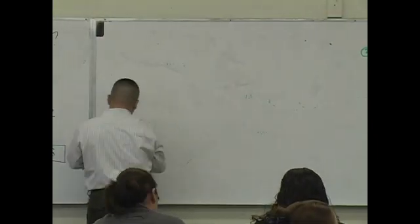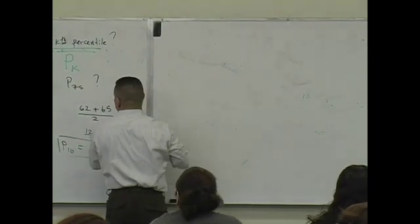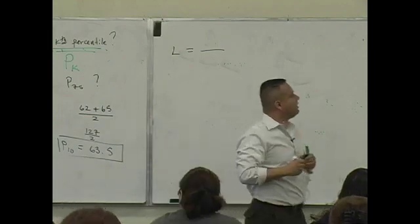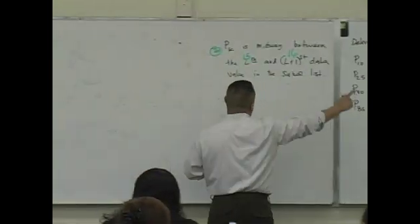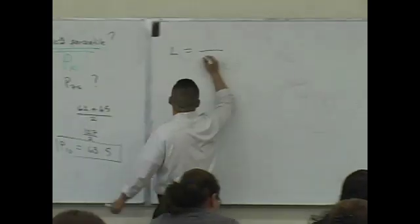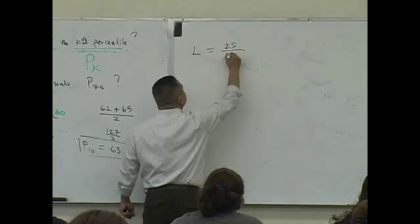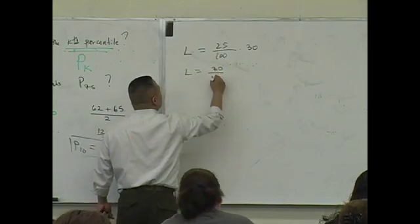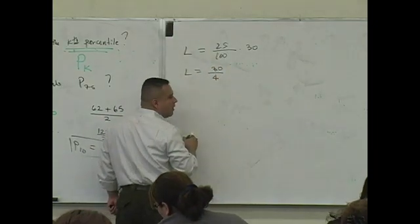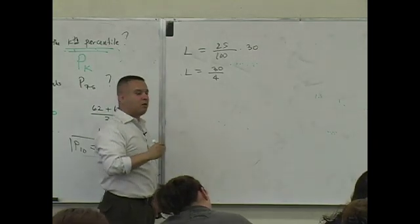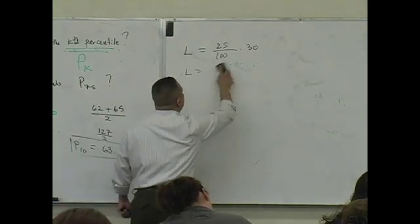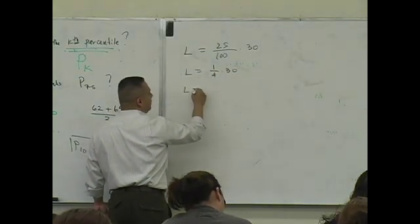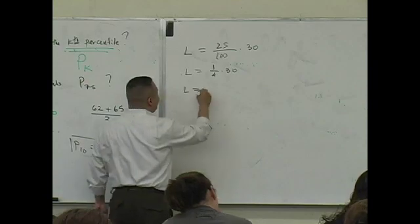The next value. What's L again? L is going to be K over 100 times N. What is K for the second question? It's what? 25 over 100 times 30. L is going to be 30 over 4. It's 1 fourth of 30, right? Isn't that 25 over 100? What's 1 fourth of 30? 7.5.